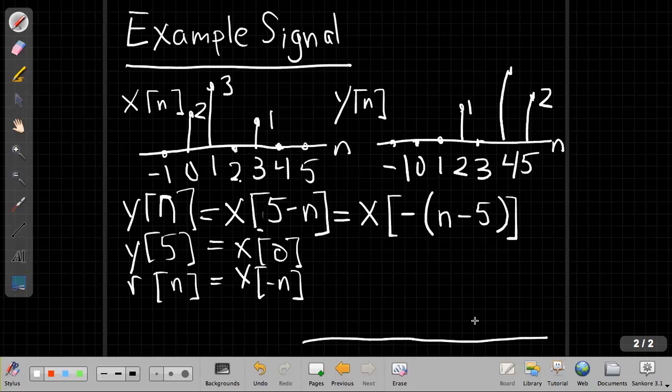Well, if I just flip it in time, the thing at zero would still be at zero. Then we'd have the, at minus one, we'd end up with something with height three.